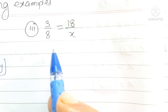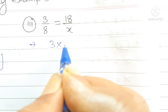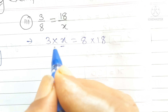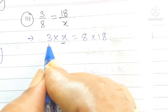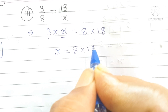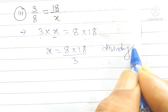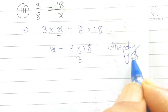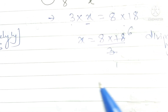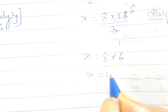3 by 8 is equal to 18 by x. First step: cross multiplication — 3 into x is equal to 8 into 18. So x is equal to 8 into 18 divided by 3. Dividing: 3 into 18 gives 6, so x is equal to 8 into 6, which is 48. The answer is x is equal to 48.